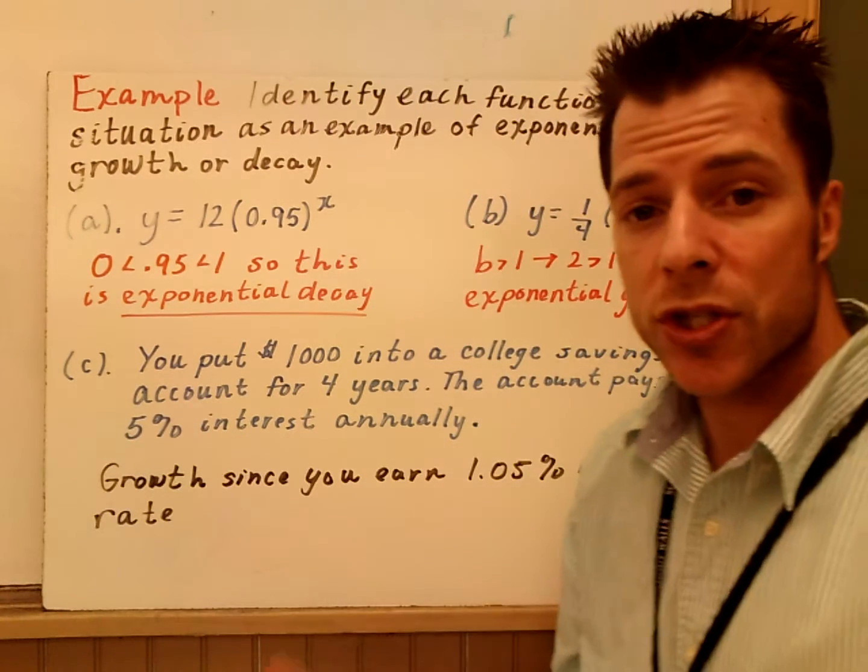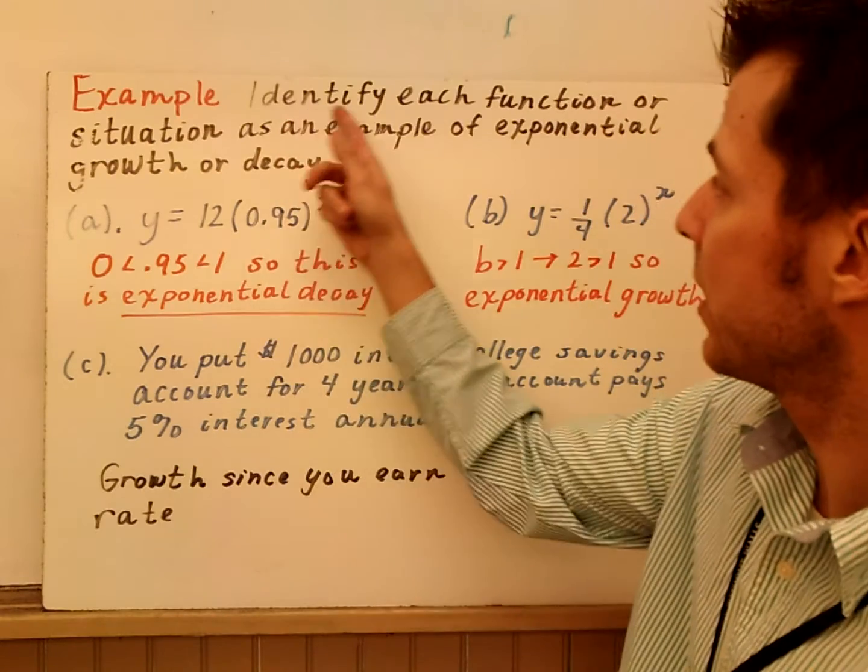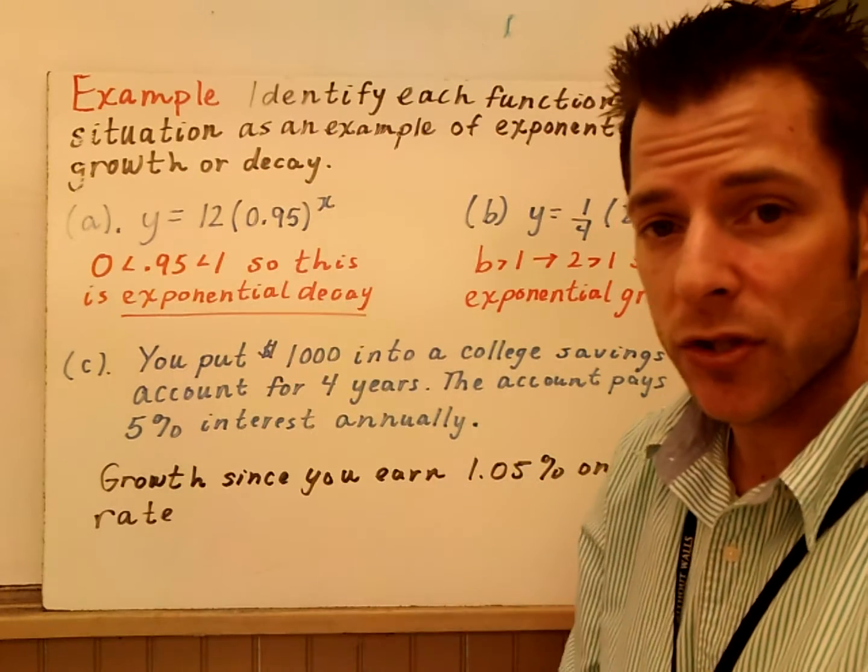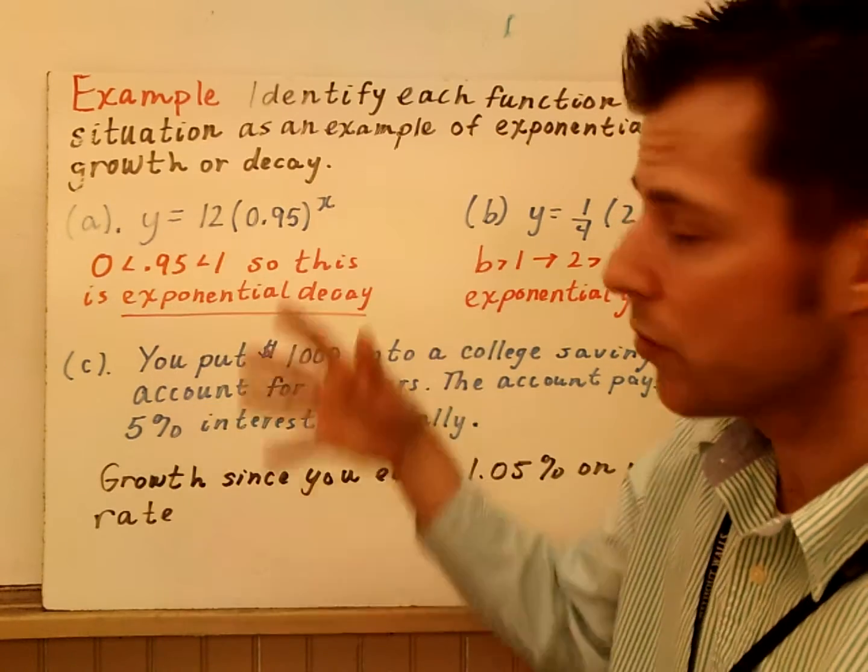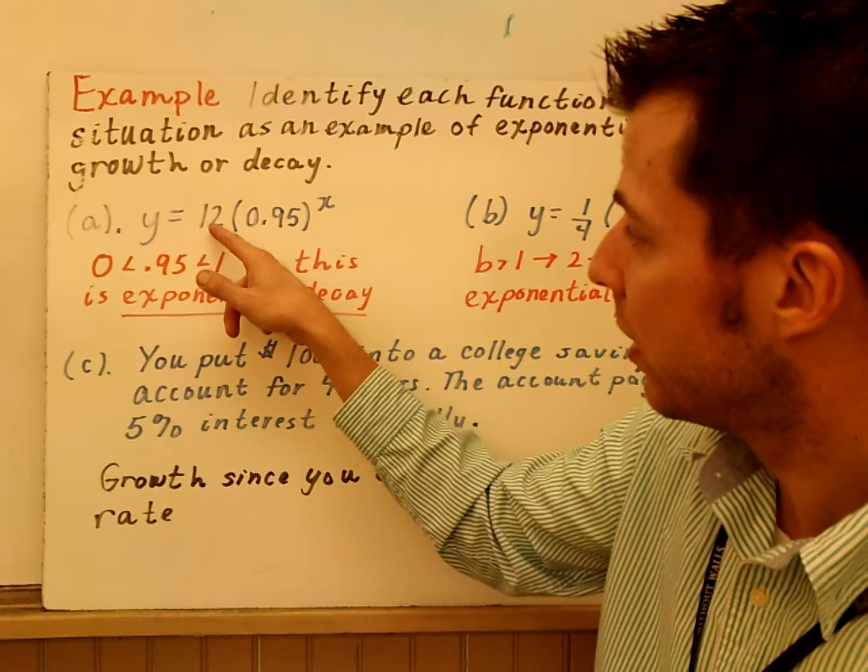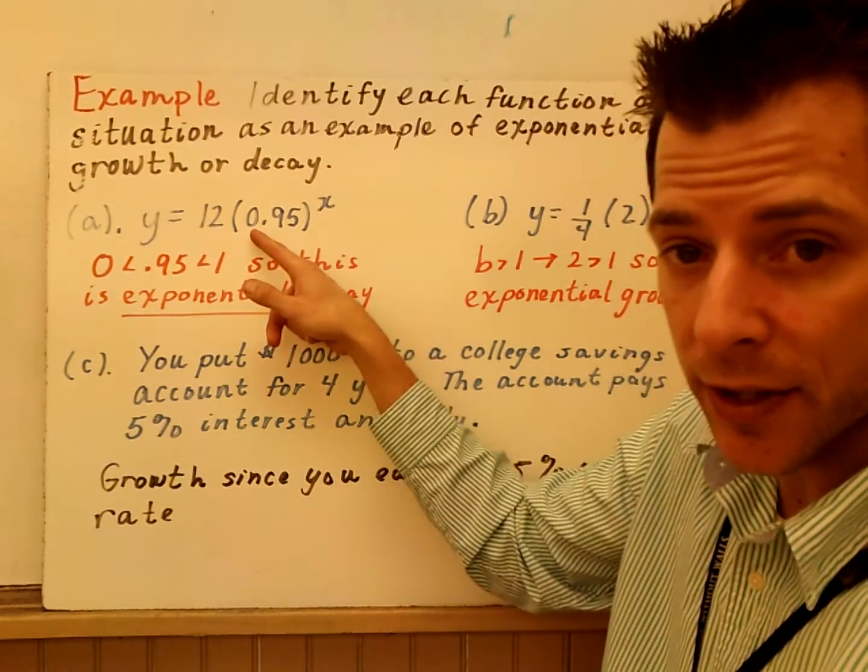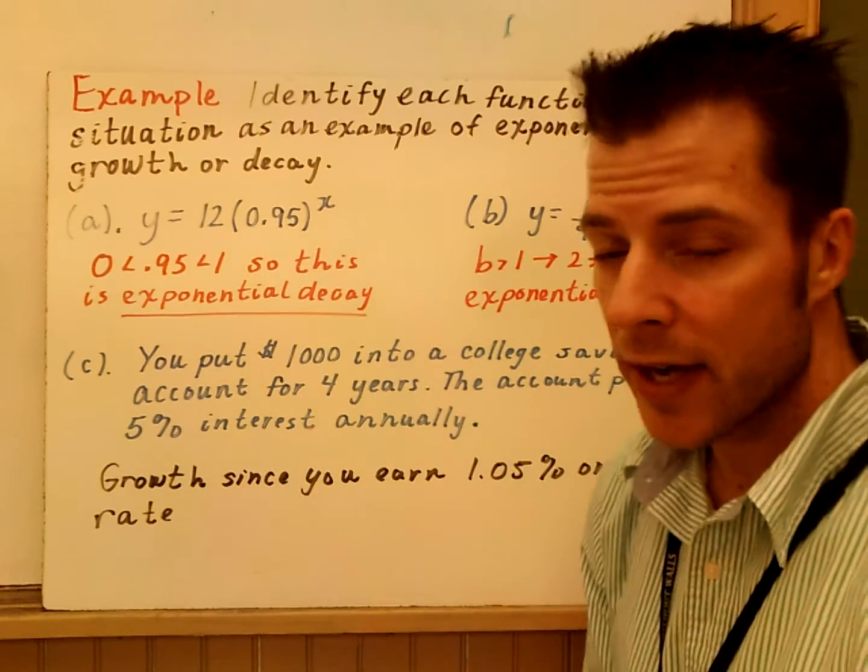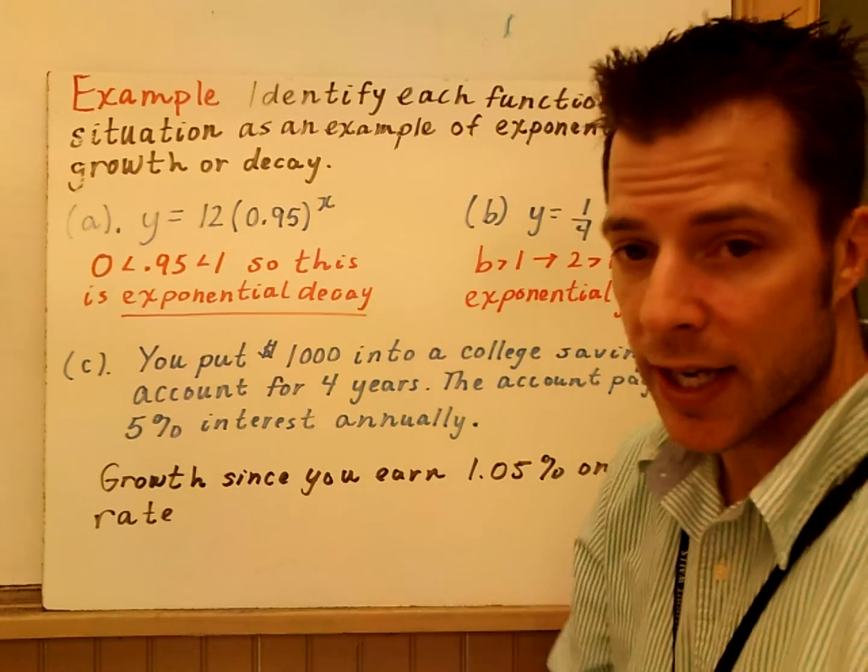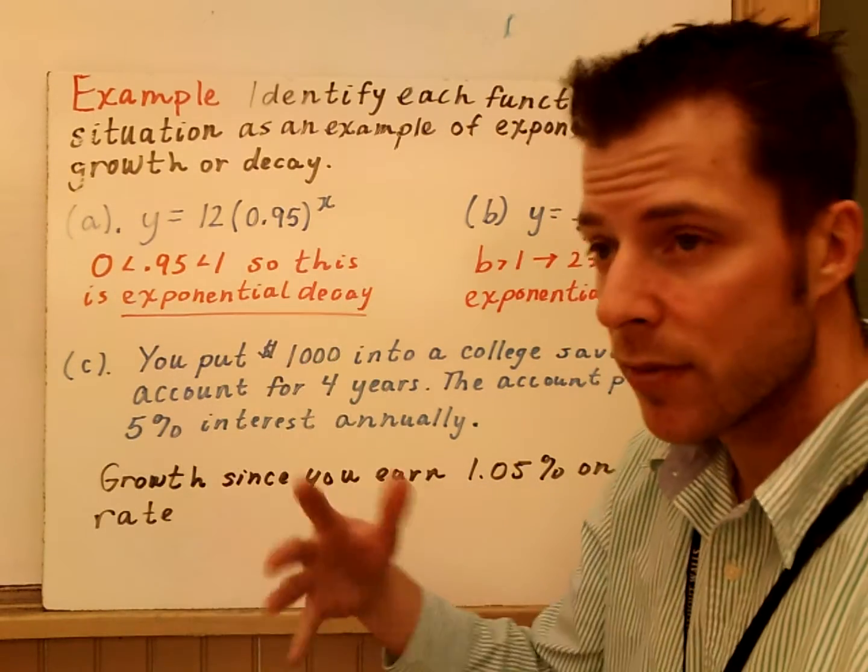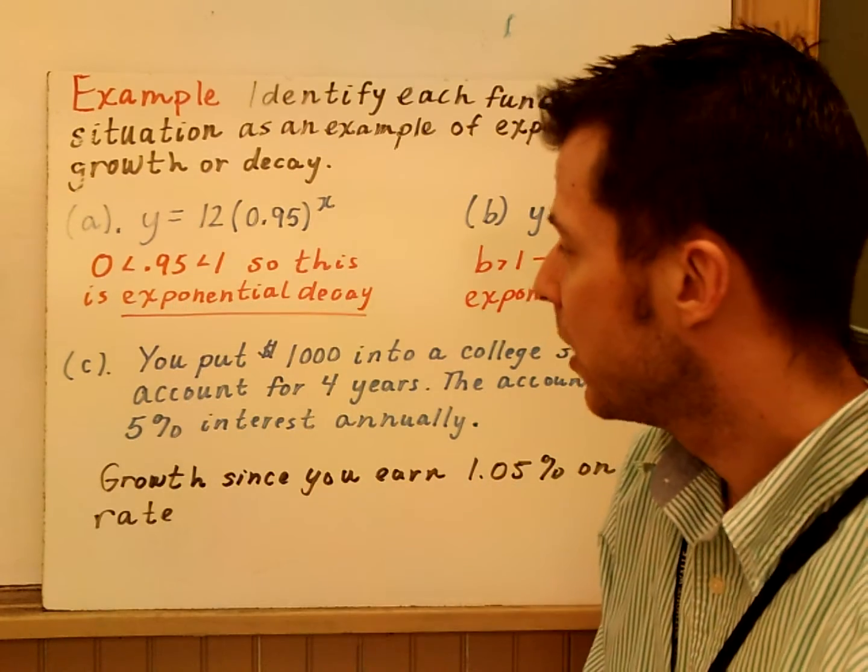In this one, we're just going to identify equations or situations where we have growth or decay. So we have three examples here. And the first two are just equations. So, I look at y equals 12 times 95 hundredths to the x. There's your b value. My b value is between 0 and 1. So, that means my equation is exponential decay. My b value is between 0 and 1. Note that in this case, the y intercept would be 12.